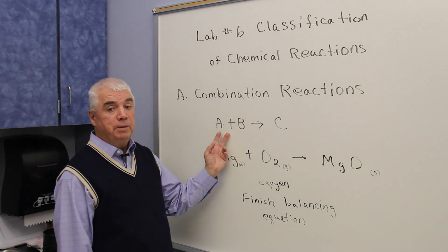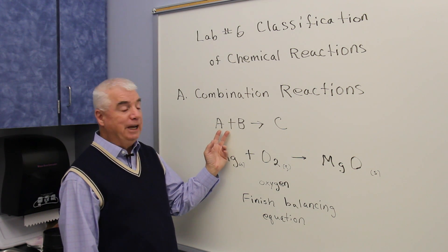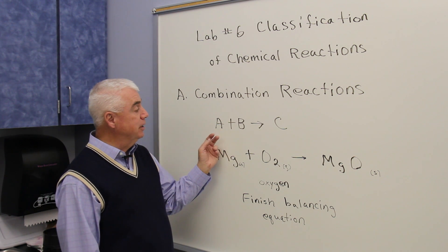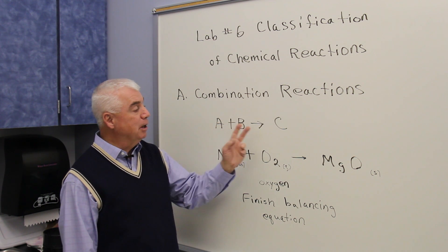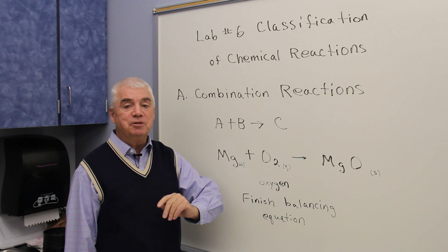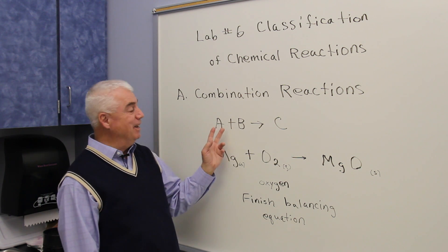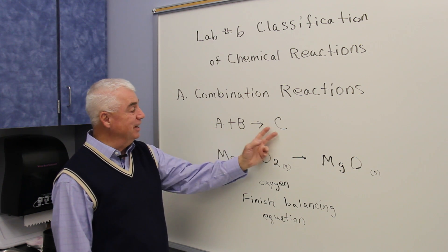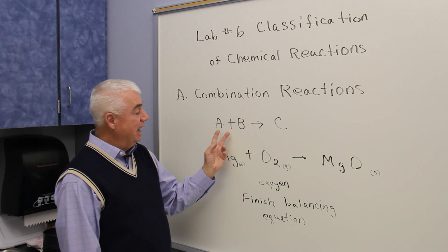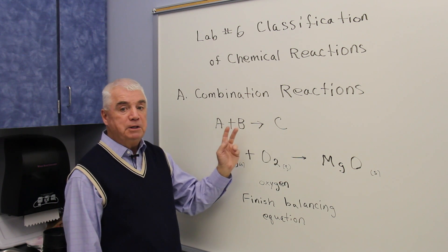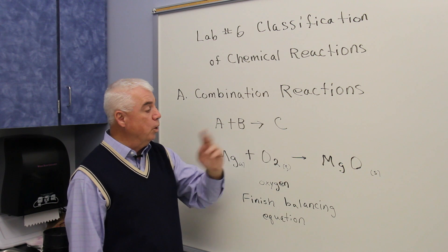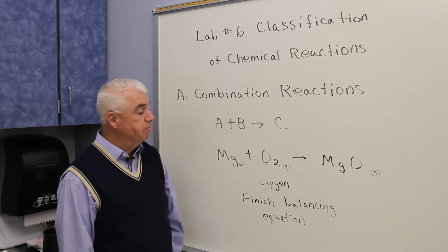The general formula for a combination reaction is A plus B goes to C. That's the classic chemical reaction — have two starting materials, one product.